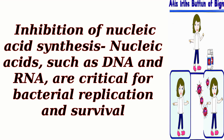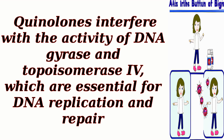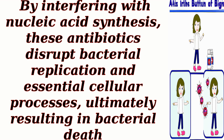Inhibition of Nucleic Acid Synthesis: Nucleic acids, such as DNA and RNA, are critical for bacterial replication and survival. Antibiotics like quinolones and rifampin target enzymes involved in nucleic acid synthesis. Quinolones interfere with the activity of DNA gyrase and topoisomerase 4, which are essential for DNA replication and repair. Rifampin, on the other hand, inhibits RNA polymerase, the enzyme responsible for RNA synthesis. By interfering with nucleic acid synthesis, these antibiotics disrupt bacterial replication and essential cellular processes, ultimately resulting in bacterial death.